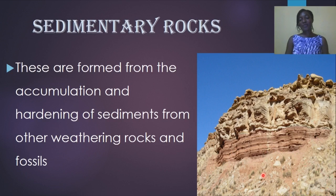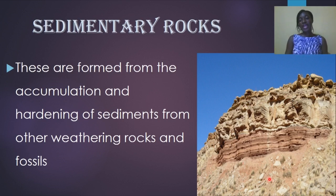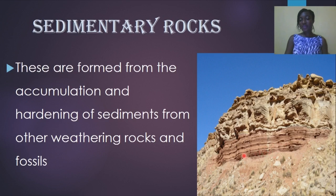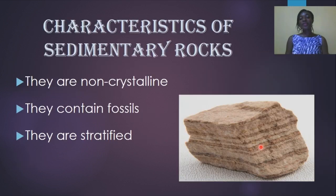Looking at the image, you can see that different layers have different compositions — the bottom layer differs from the middle, which differs from the top. Over the years, various rocks broke down and compressed along with sand, fossils, and dead and decaying organic matter. This combination piled up over the years to form certain lines — layer upon layer — and that is how sedimentary rocks are formed.